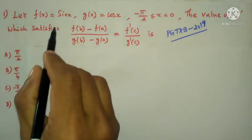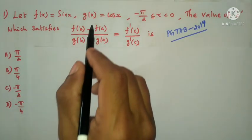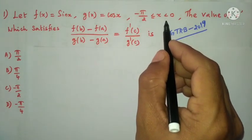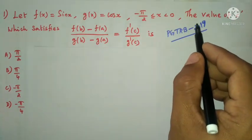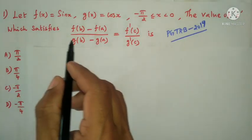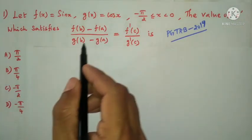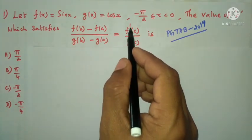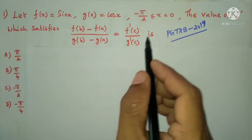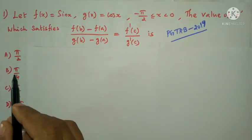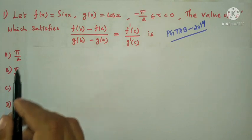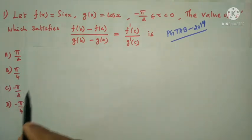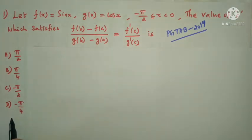First question: Let f(x) = sin x and g(x) = cos x on the interval -π/2 ≤ x ≤ 0. Find the value of c which satisfies f(b) minus f(a) divided by g(b) minus g(a) equal to f'(c) divided by g'(c). Options: A) π/2, B) π/4, C) -π/2, D) -π/4.